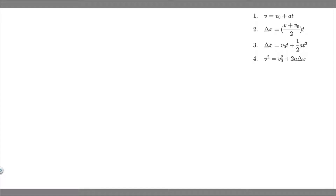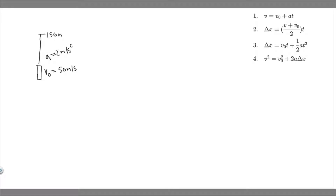Let's draw what's going on here. The rocket has an initial velocity of 50 meters per second going upward, and it travels until it hits an altitude of 150 meters. Through this entire interval, its acceleration is 2 meters per second squared because the engine is powering upwards. At 150 meters, the acceleration changes because the engine stops — there's no boost from the engine. So it's just the acceleration due to gravity, minus 9.8, but the velocity is still positive so it keeps traveling upwards until it reaches a maximum height.